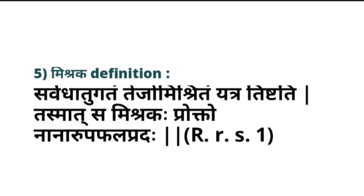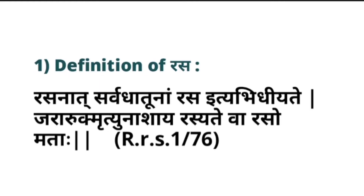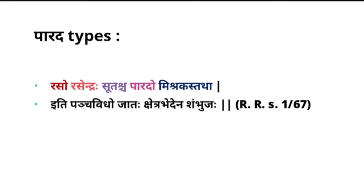Mishraka definition: Sarva Dhatu Gatham Tejo Mishritam Etratishtati, Tasmasa Mishraka Ha Prokto, Nanarupa Palapradaha. As it has the absorbing and digesting capacity of every Loha and every Dhatu, and having luster, it can quickly digest anything. Nanarupa Palapradaha — it gives different kinds of Falas or different kinds of fruitfulness. That's why it is called Mishraka. So these are the five types of Parada: Rasa, Rasendra, Suta, Parada, and Mishraka.